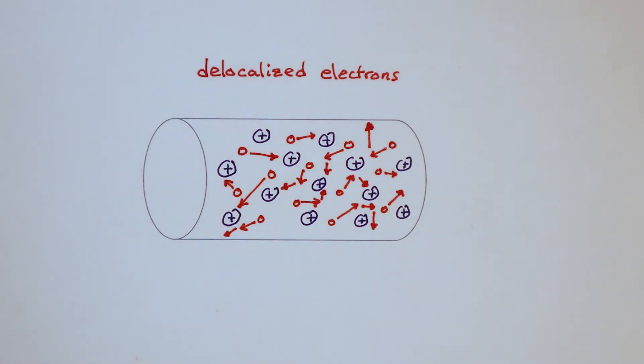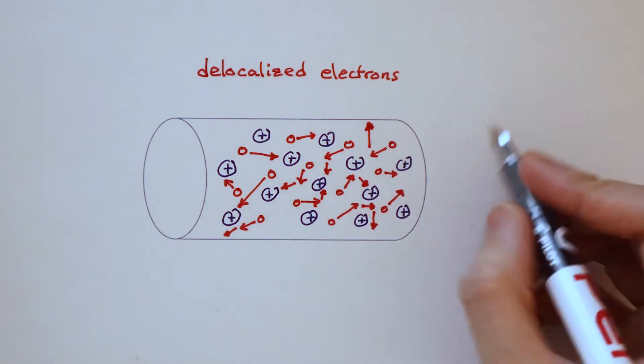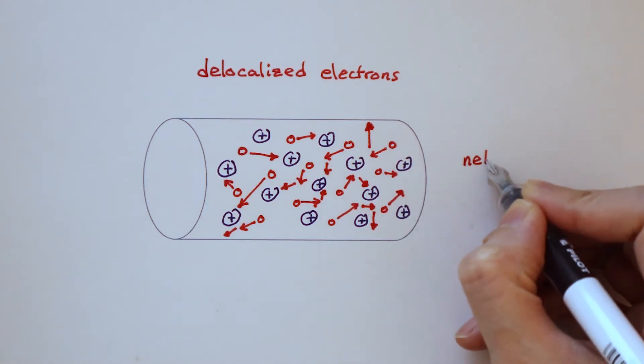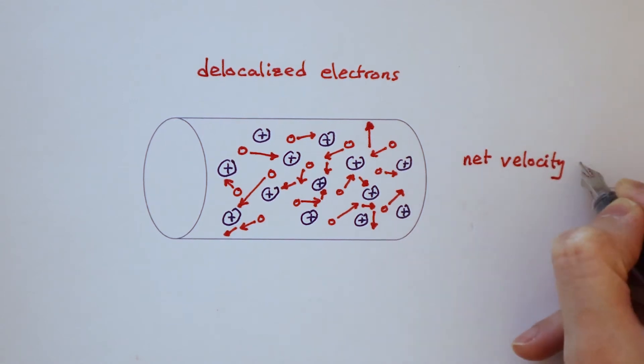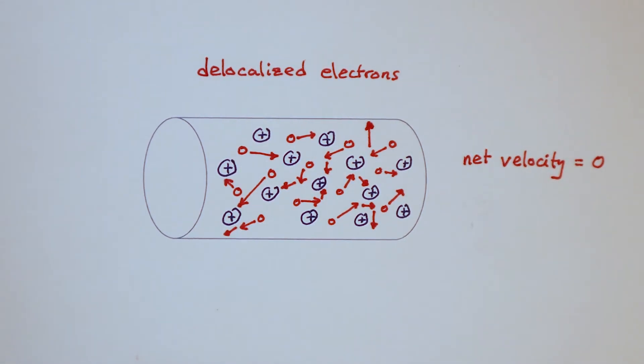When there is no potential difference between the two ends of the conductor, the random motion of the electrons will cancel out each other, giving an overall velocity, or net velocity, of zero.